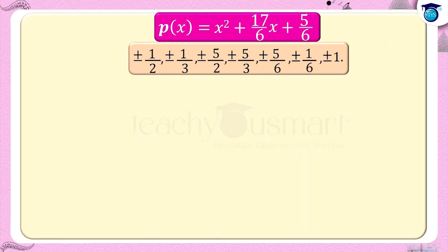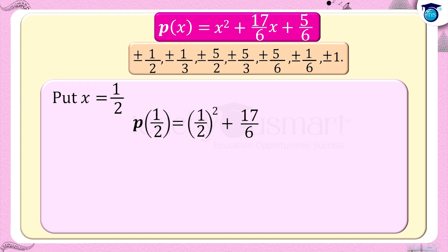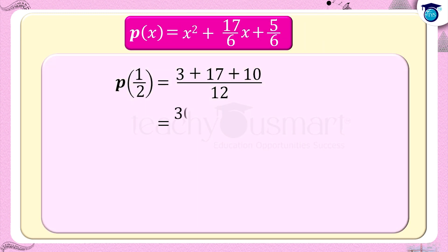p(x) equals x squared plus 17/6 x plus 5/6. Put x equals 1/2: p(1/2) equals (1/2) squared plus 17/6 times 1/2 plus 5/6, equals 1/4 plus 17/12 plus 5/6, equals (3 plus 17 plus 10) divided by 12, equals 30/12, equals 5/2, which is not equal to 0. That is, p(1/2) is not equal to 0.